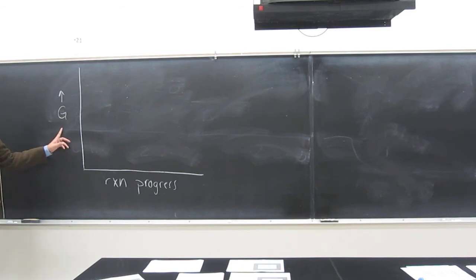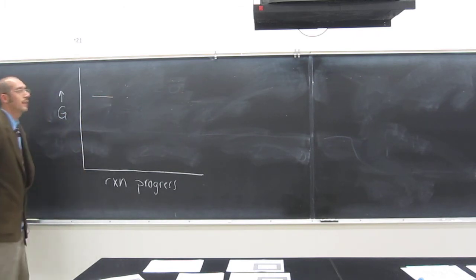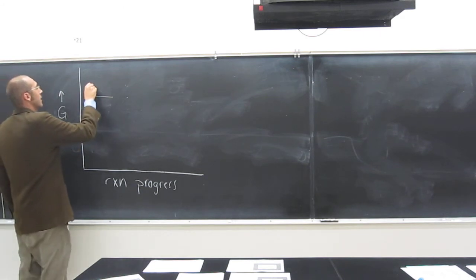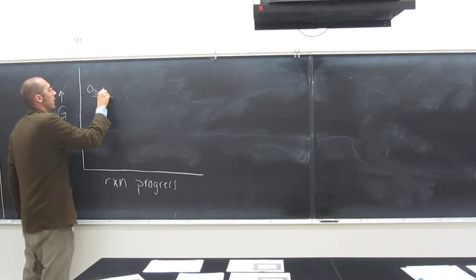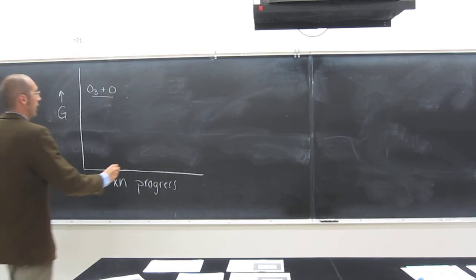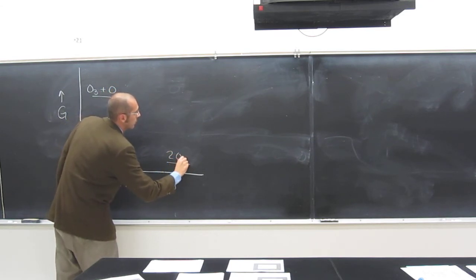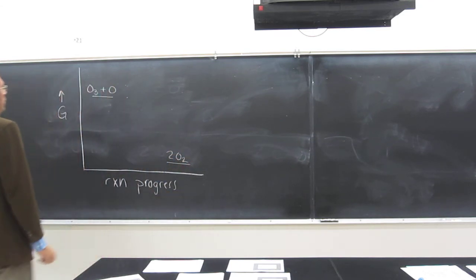And remember, G is Gibbs free energy, so that's the energy of the whole system. Here we have the reactants here. What are the reactants? In this case, it's O3 plus O. Then we've got the products down here, 2O2.